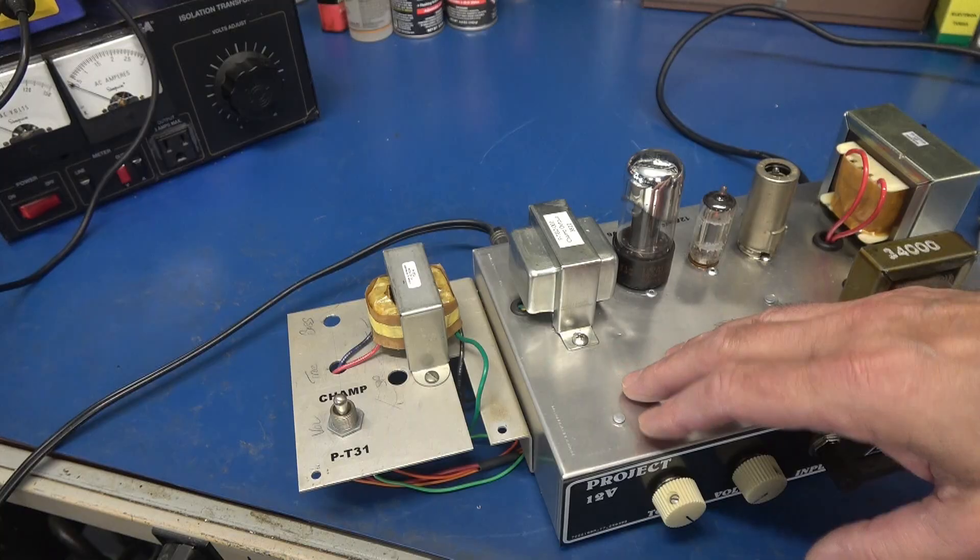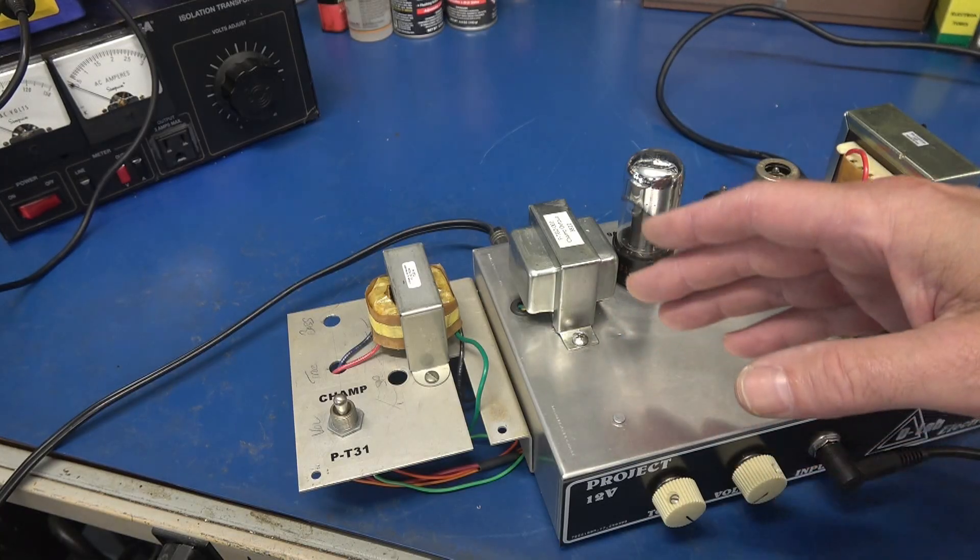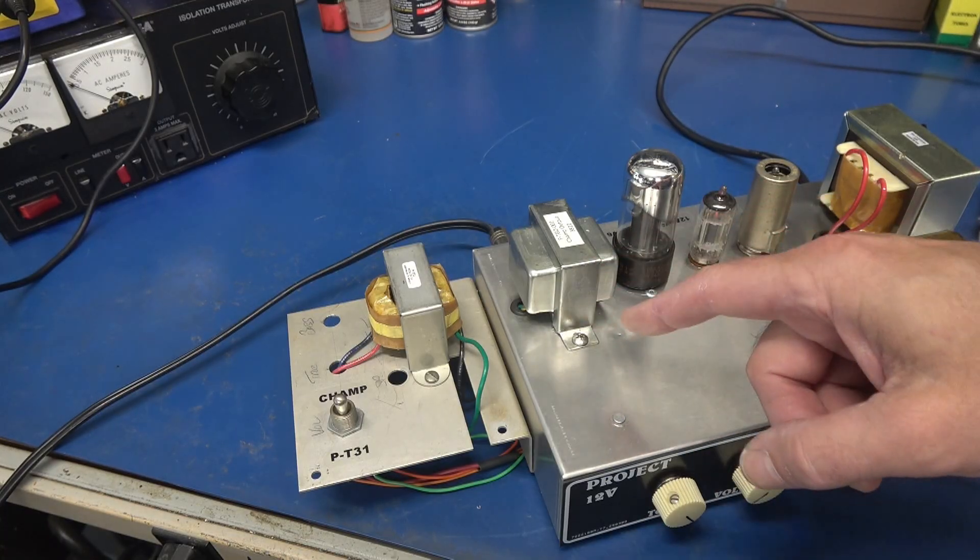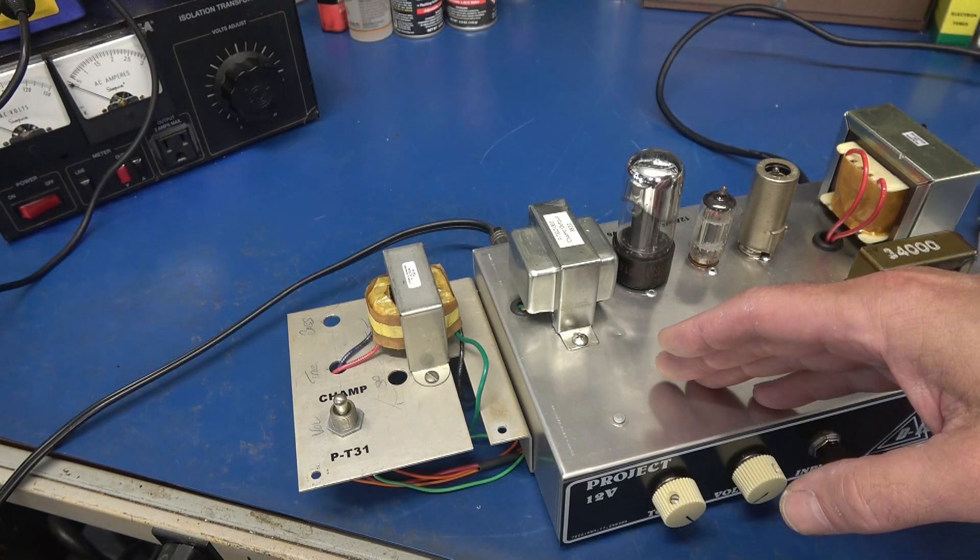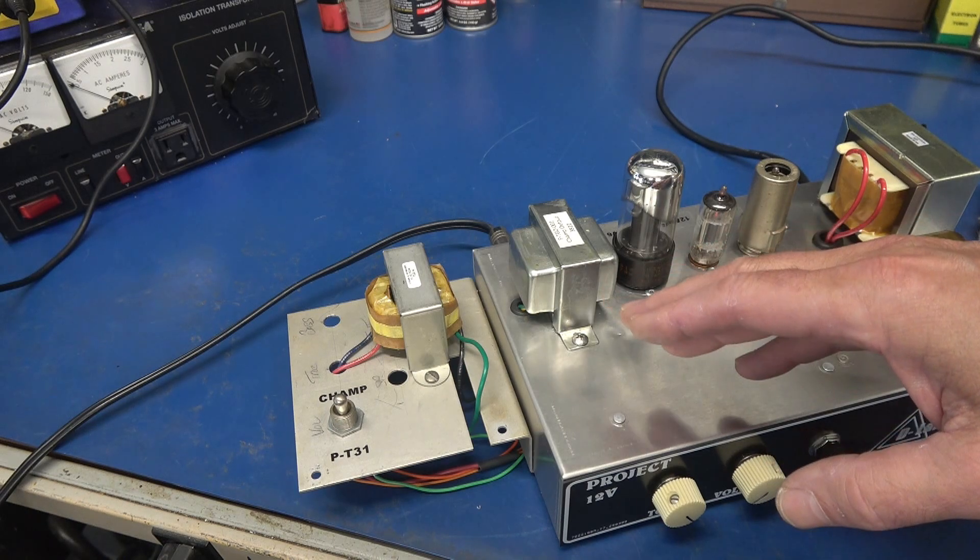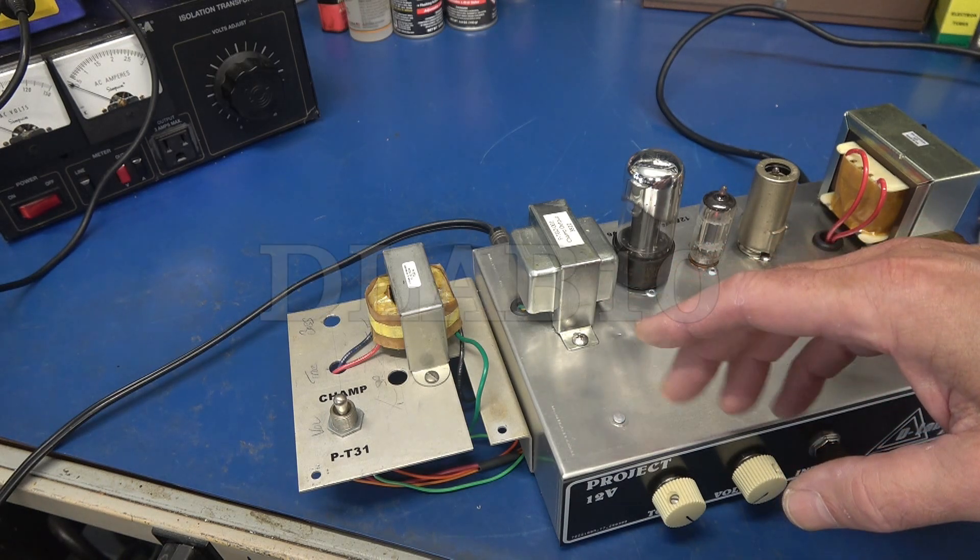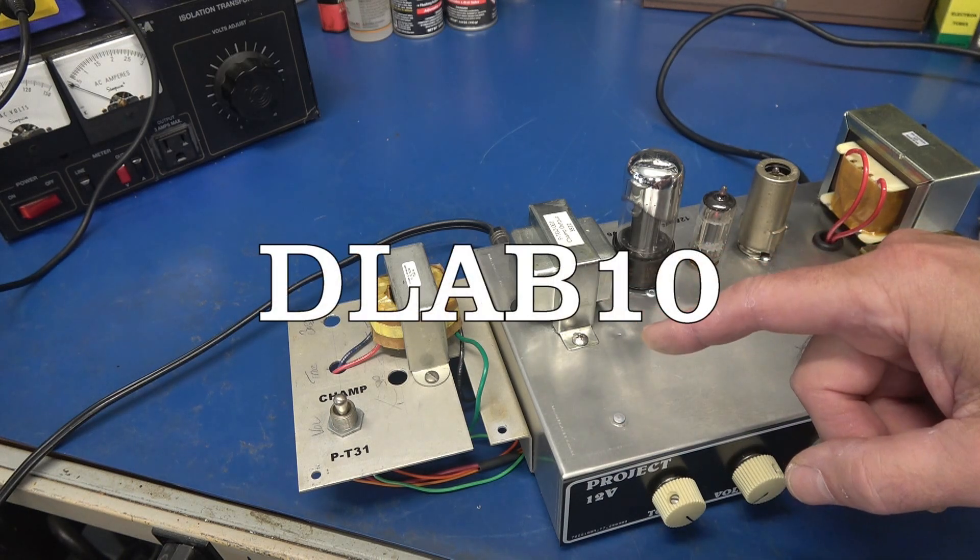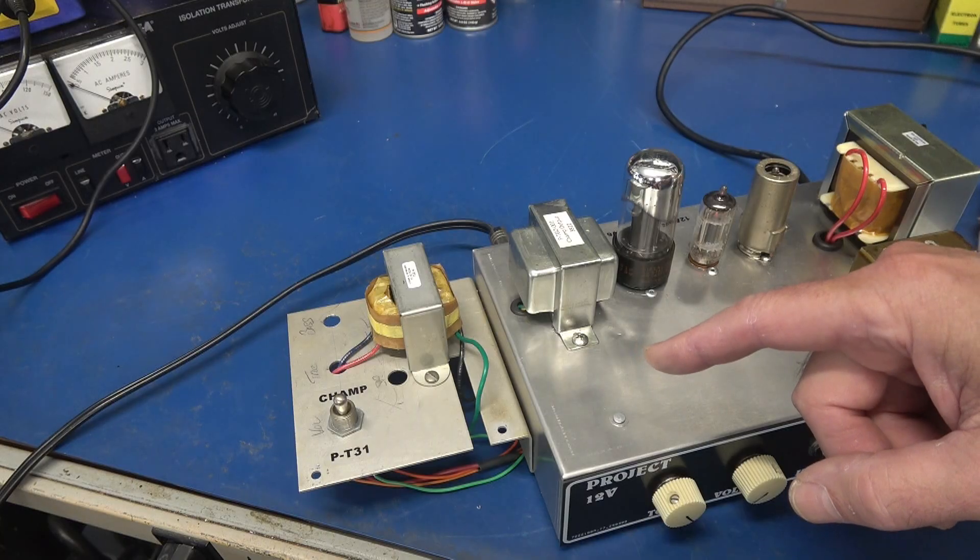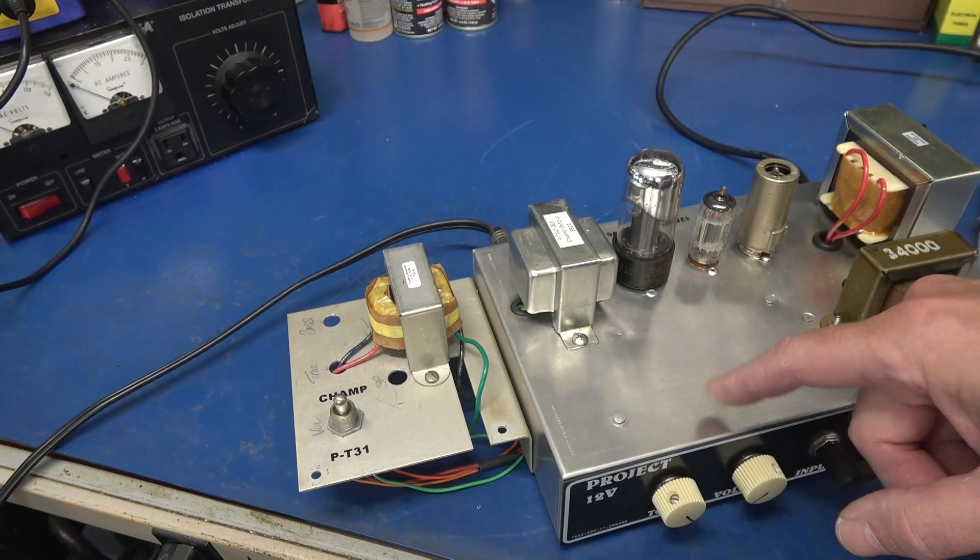So if you're repairing an amplifier or building your own, I'd highly recommend that you check out these two transformers on AmplifyParts.com. And if you decide to buy them, make sure to use the code DLAB10, so D-L-A-B-10, and you get a 10% discount.